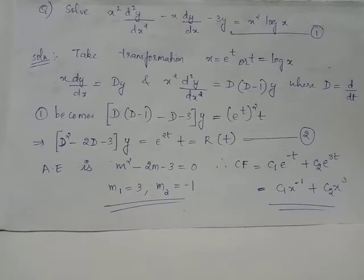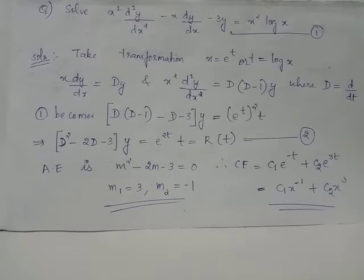In order to find the complementary function for differential equation 1, which is the Cauchy-Euler type, we have to again make use of the transformation x equals e raised to t. Thus, the complementary function for equation 1 will be c1 multiplied by x inverse plus c2 multiplied by x cubed. This is obtained by substituting e raised to t equals x: e raised to negative t becomes x to the power minus 1, and e raised to 3t becomes x cubed.